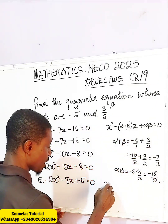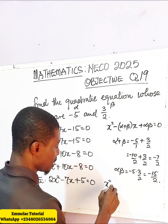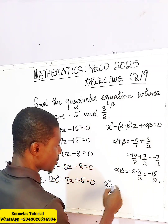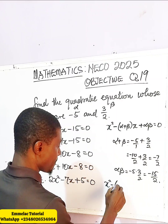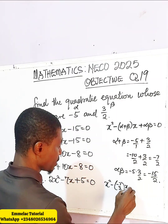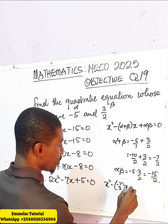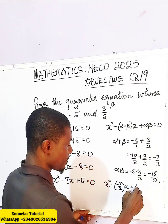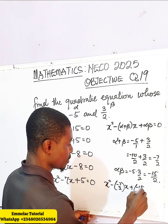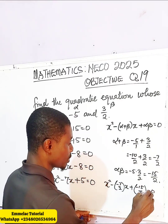Here we have x squared, minus negative 7 over 2 times x, plus negative 15 over 2, equals 0.